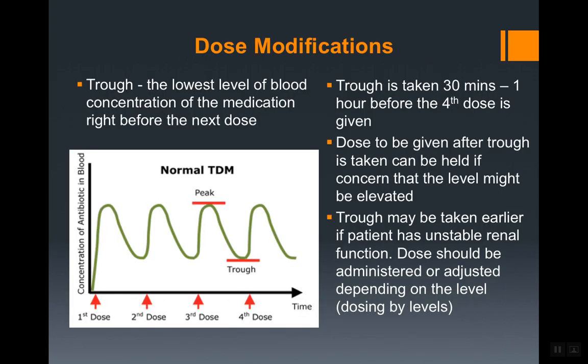Once the patient has started on the initial dose, we monitor them to prevent renal toxicity. We look at the trough level, which is simply the lowest blood concentration of the medication right before the next dose is given. After a dose is administered, the vancomycin level in the blood increases and then starts to drop over time.